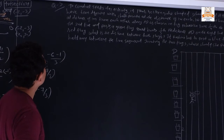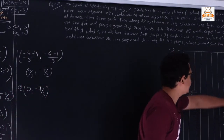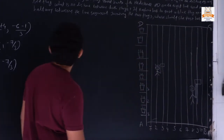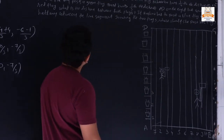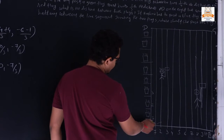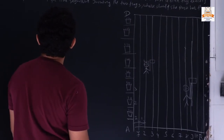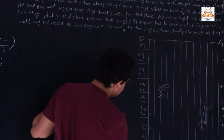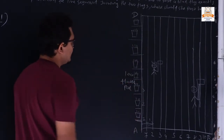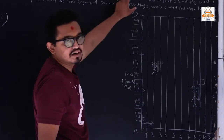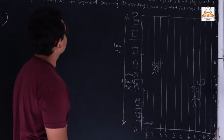Question number 3: to conduct a spot day activity in a rectangle-shaped school ground ABCD. Lines have been drawn with chalk powder at a distance of 1 meter each. 100 flower pots have been placed at a distance of 1 meter from each other along AD. So the distance of AD is 100 meters.